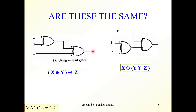Now the question is: can we expand the inputs of the exclusive OR gate — can we have a gate with three inputs? To answer this, let's look at two circuits and determine if they are equivalent. For equivalence, the output of one must equal the output of the other.